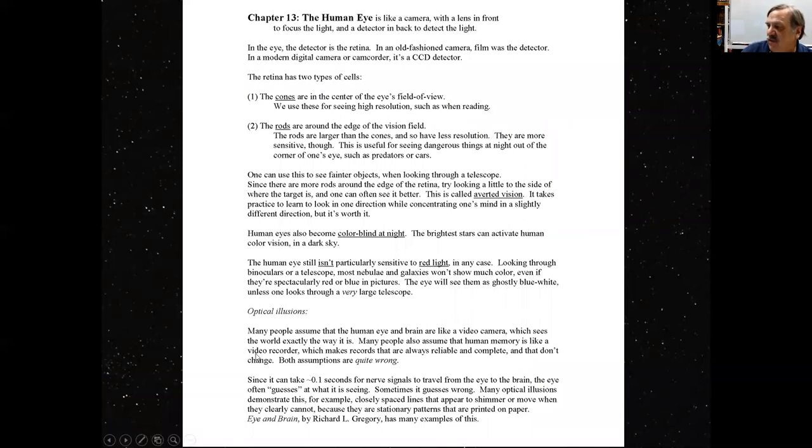Optical illusions. Many people assume that the human eye and brain are like a video camera, which sees the world exactly the way it is. Many people also assume that human memory is like a video recorder, which makes records that are always reliable, complete, and that don't change. Both these assumptions are quite wrong. There's quite a lot of onboard processing your brain does to images, and that your eyes do to images even before they go to the brain.